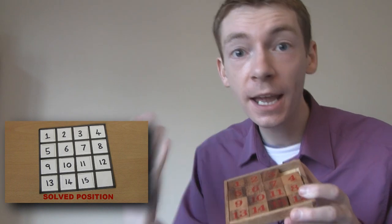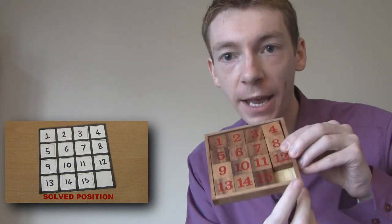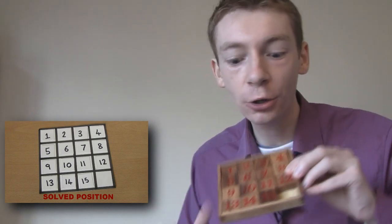Traditionally though you get the numbers 1 to 15 like that with a blank space in the bottom right corner, and you move the tiles by sliding them across like this. Now the solved position is the numbers 1 to 15 in order with the blank space, like I said, in the bottom right corner.